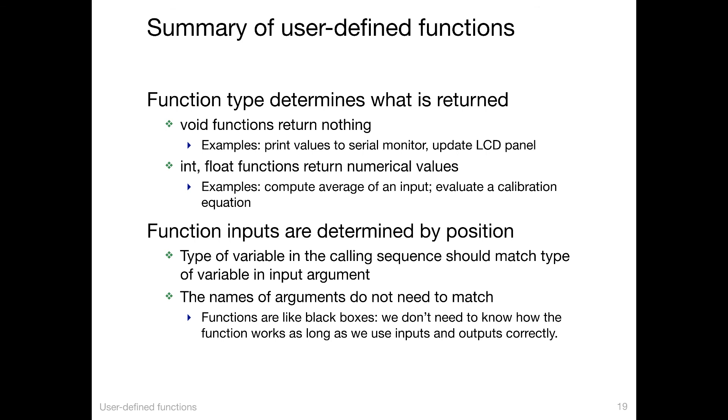Function inputs are determined by position, not by name. You have to have the types of each variable lining up. So the first variable is an int, the second variable is a float. That matters. Also, the value that gets passed in first will be assigned to a particular value. So the types and the calling sequence need to match up. The name of the arguments do not need to match. Functions in this way are like black boxes. We don't need to know how the function works as long as we use the inputs and outputs correctly.